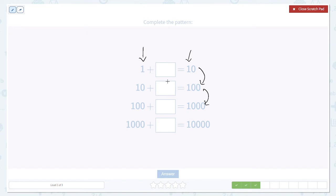1 plus what is equal to 10? Well, that's easy enough. That's 9. So we just keep adding zeros to that 9: 90, 900, and 9,000.